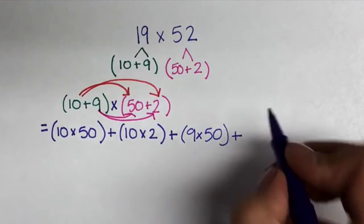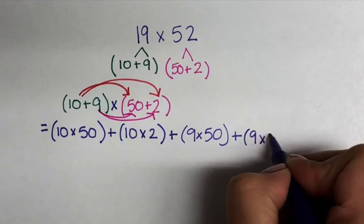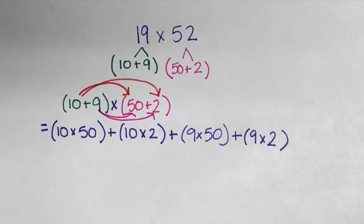And lastly, 9 times 2, which is the ones in 19 and 52 being multiplied together as well.